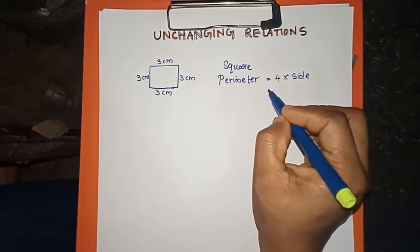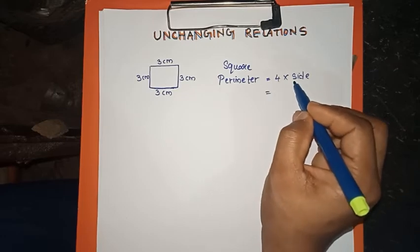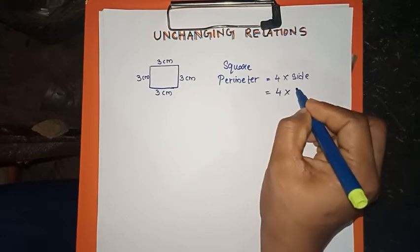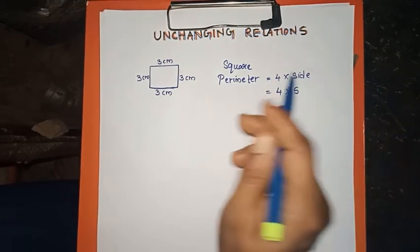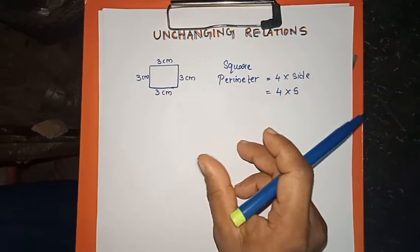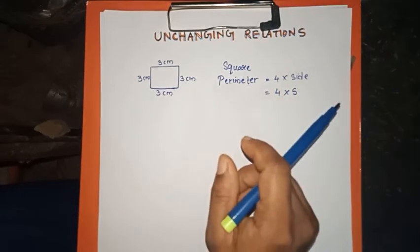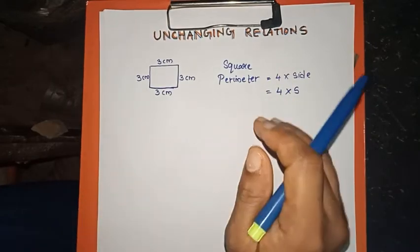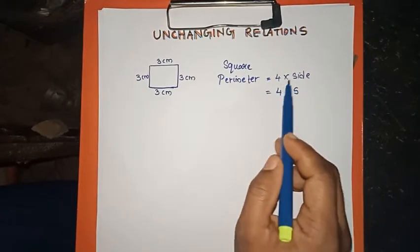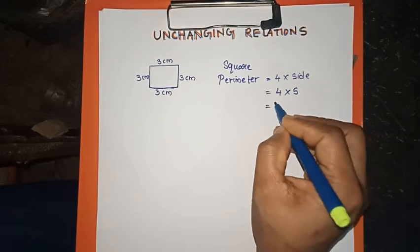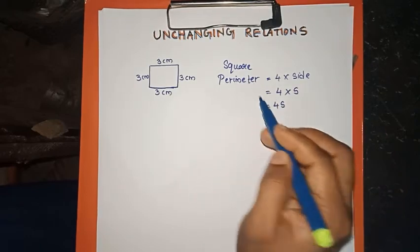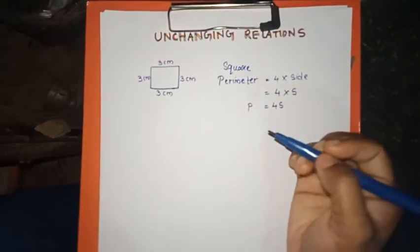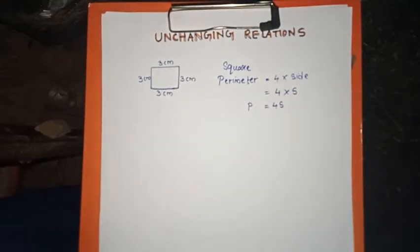We can write it as a letter — we can write it in a short form as a simple equation. We will write 4s as a formula. What is the equation? P is equal to 4s.